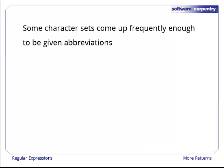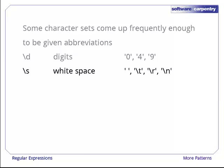Now that we know how to work with backslashes in regular expressions, we can take a look at some character sets that come up frequently enough to deserve their own abbreviations. If you use backslash D in a regular expression, it matches the digits 0 through 9. If you use backslash S, it matches the white space characters: space, tab, carriage return, and newline.